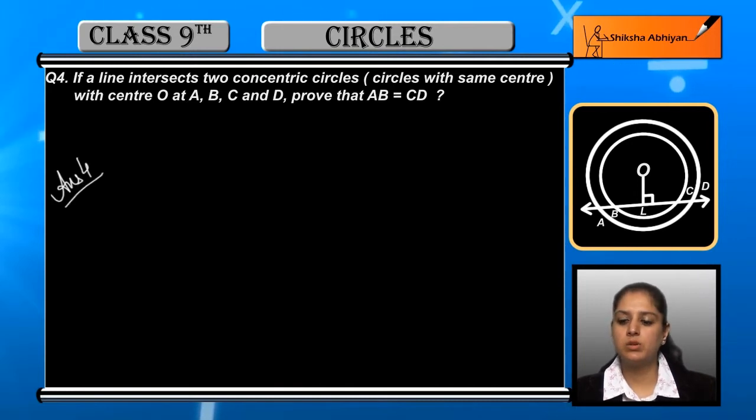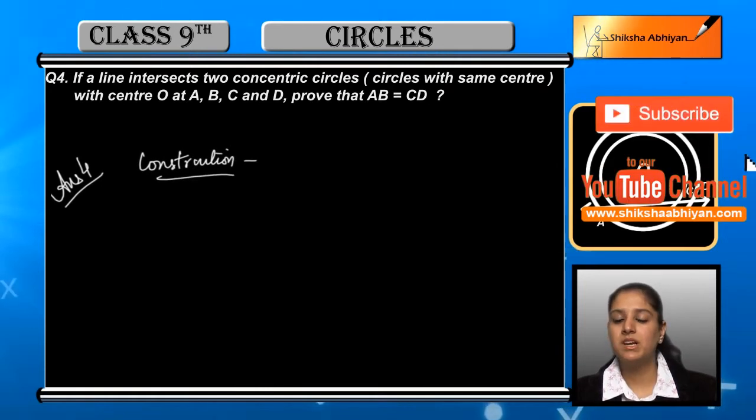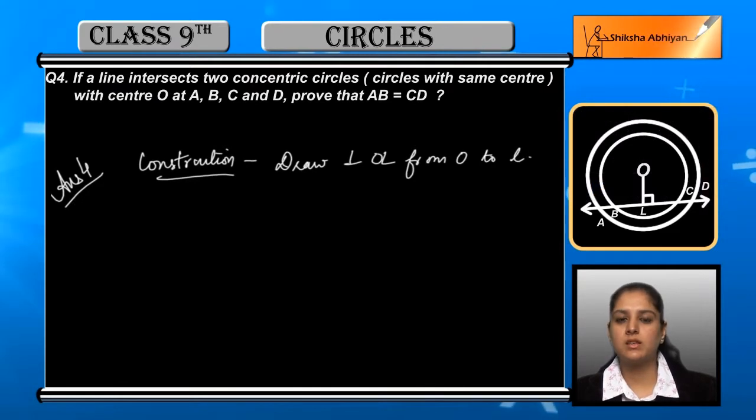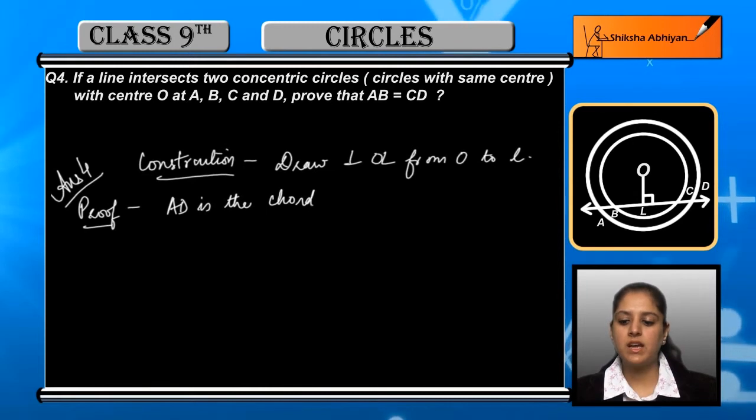Now we have to prove something. AD is the chord of the bigger circle. We have two concentric circles - concentric circles means one circle is bigger and one circle is smaller.